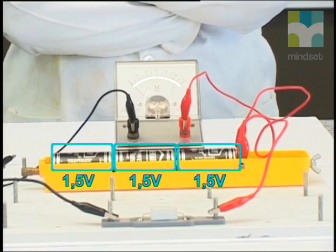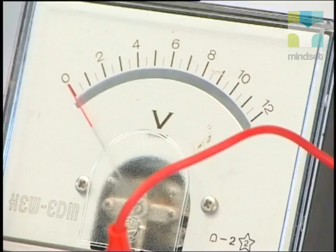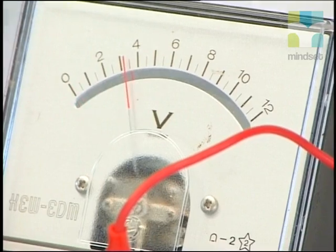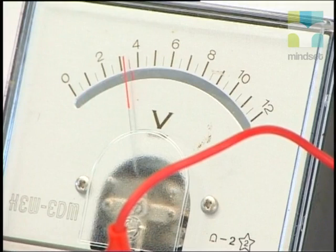These three cells each have an EMF of 1.5 volts. When these three cells are connected in series, a voltmeter across them should read 4.5 volts if there is no internal resistance. However, as we can see, the reading on the voltmeter is less than 4.5 volts. This tells us that the cells have internal resistance.